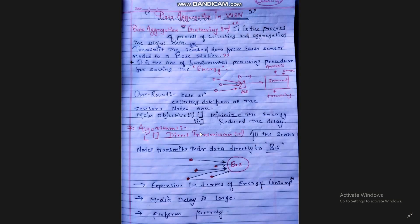Let's get back to our main topic: data aggregation. Data aggregation is the process of collecting and aggregating useful data, or we can say transmitting the sensor data from each sensor node to a base station. The base station is the place where all the sensor nodes submit their data, and these base stations transmit the sensor data to the internet for further analysis, storage and processing.